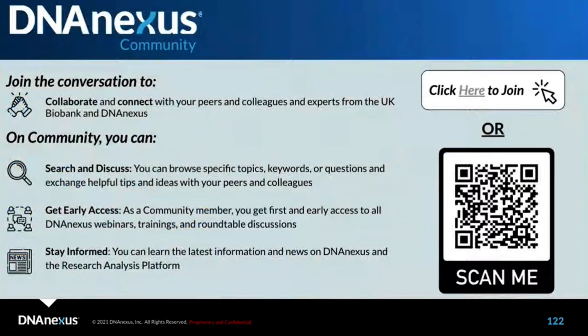The UKB RAP community at community.dnanexus.com is a great resource for finding answers, asking questions, and discovering example notebooks on the GitHub repository. Links to community resources can be found in the related content module — the paperclip icon at the bottom of your screen. The community is free to join, takes less than two minutes to register, and includes a getting-started section, tools and tutorials, and an announcements tab for upcoming webinars.